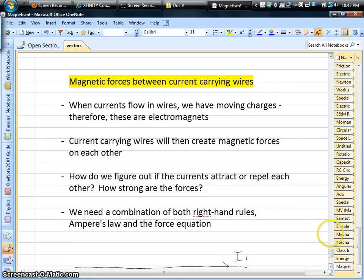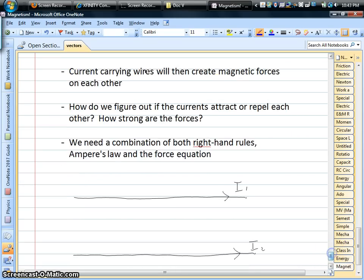And therefore, because currents are moving charges and moving charges all produce magnetic fields, we have two electromagnets. And so these wires, these currents, will actually produce forces on each other.